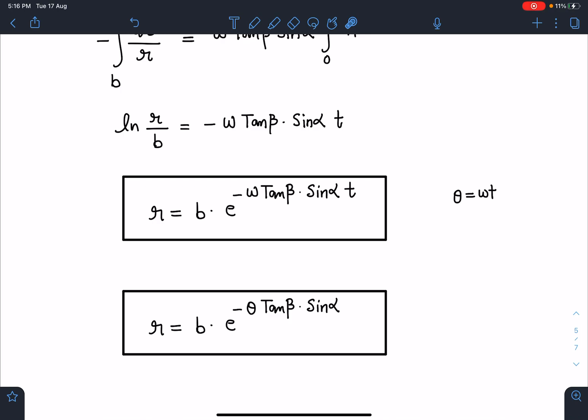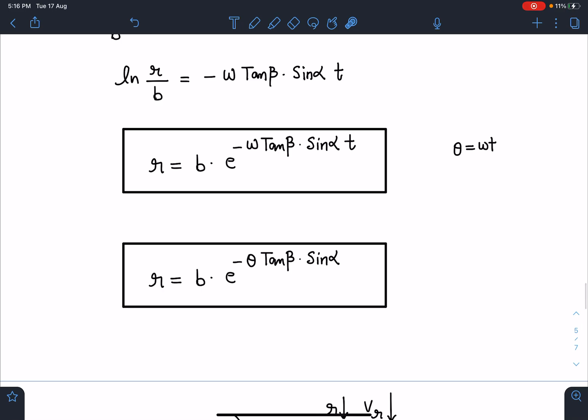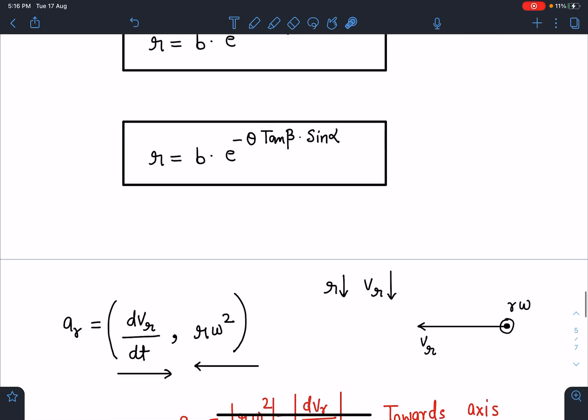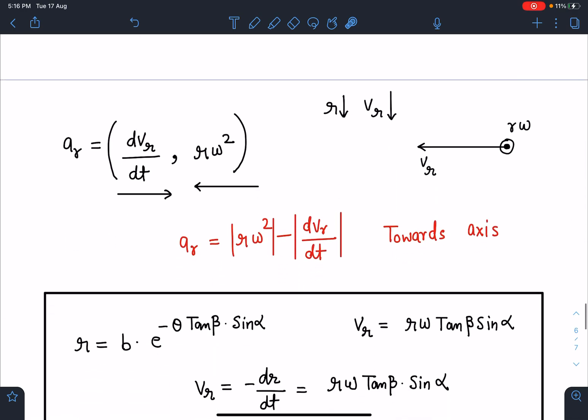If you see, this is like r equals r₀ e to the power θ, which satisfies the equation of a spiral.